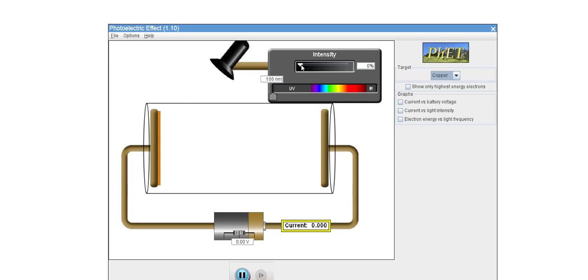If I turn the source on so that it emits ultraviolet or UV radiation, we see that some electrons are emitted from the copper plate. This is known as photoemission and the emitted electrons are known as photoelectrons.